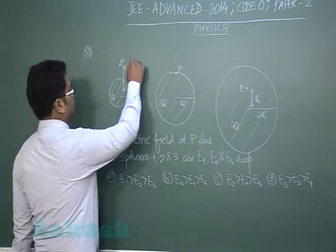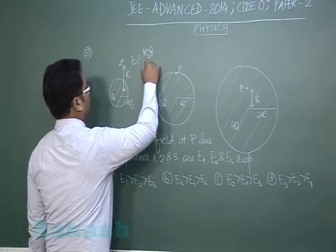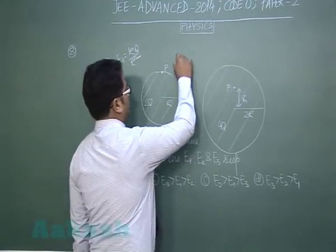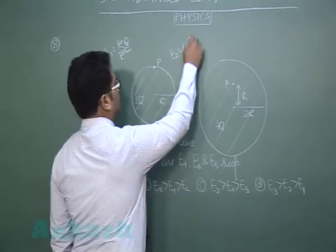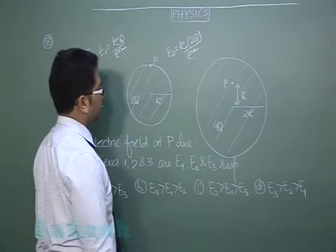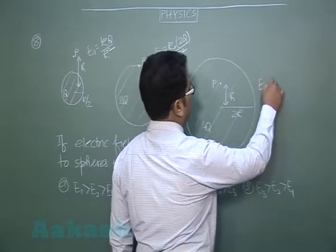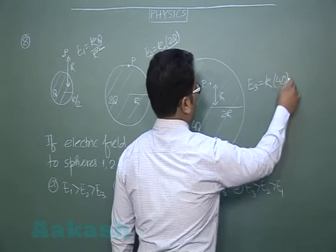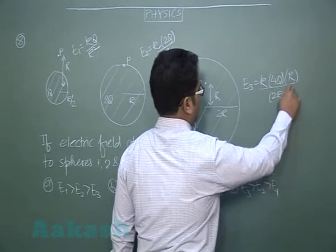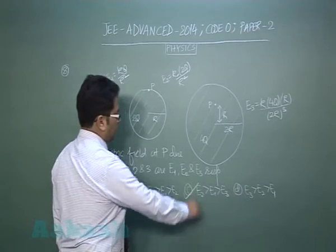So for the first it is quite simple, that will be k q by r square because it is outside. For the second that will be k, the charge is 2q and the radius is r square because we are exactly finding here. And for the third it's a point inside, so k q r is the distance from the center by radius cube. Quite obviously it will lead us to option number c.